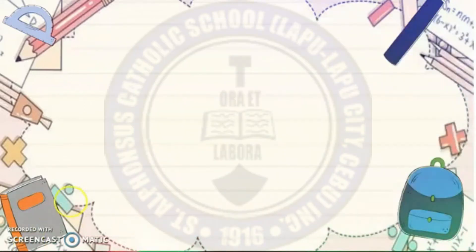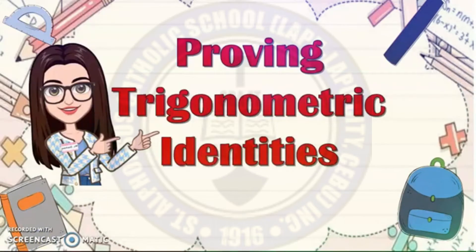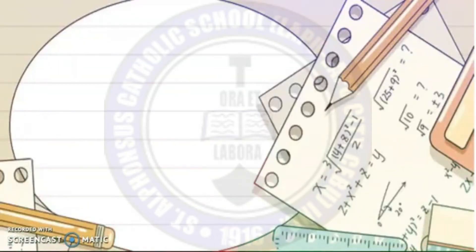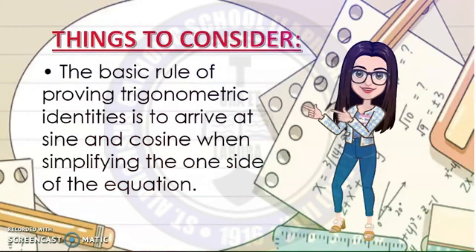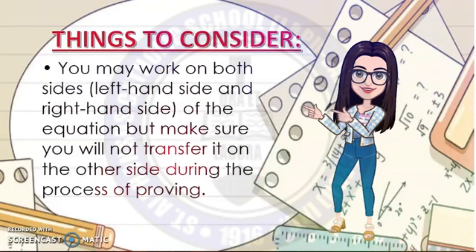For today, we're going to discuss about proving trigonometric identities. Before we start with this lesson, you have some things to consider. The basic rule of proving trigonometric identities is to arrive at the sine and cosine when simplifying one side of the equation. You may work on both sides of the equation, but make sure you will not transfer terms to the other side during the process of proving.